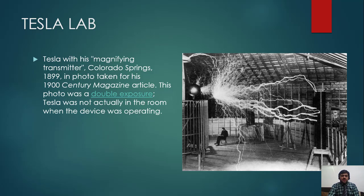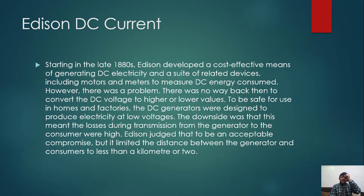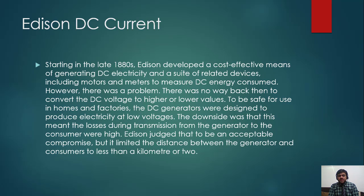What happened to Edison? In the late 1880s, Edison developed a cost-effective means of generating DC electricity and related devices including motors and meters to measure energy consumed. However, there was no way back then to convert DC voltage to higher or lower values to be safe for use in homes and factories. The DC generators were designed to produce electricity at low voltages, meaning losses during transmission from generator to consumer were high. Edison judged this an acceptable compromise, but it limited the distance between generator and consumer to less than a kilometer or two.